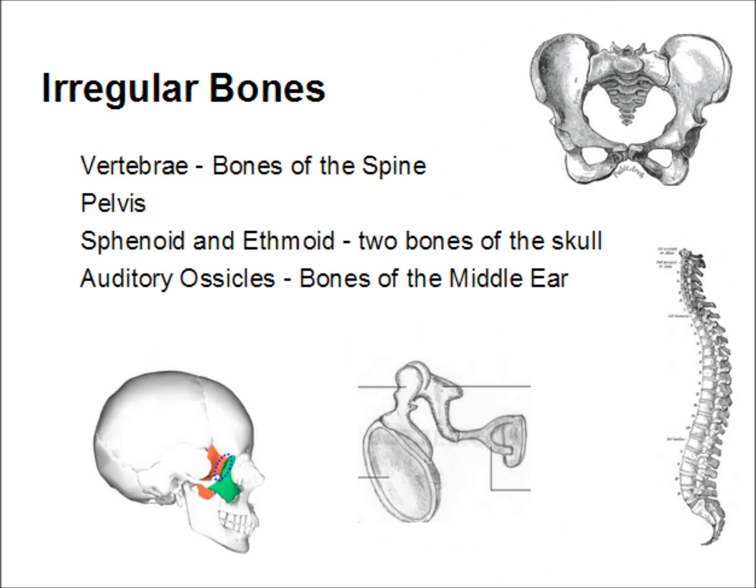Irregular bones are so called because they don't fit neatly into any other category. The vertebrae, or spine bones, are irregular bones. The pelvis is considered irregular, as are the sphenoid and ethmoid bones, two bones of the skull, and the auditory ossicles, which are the bones of the middle ear.